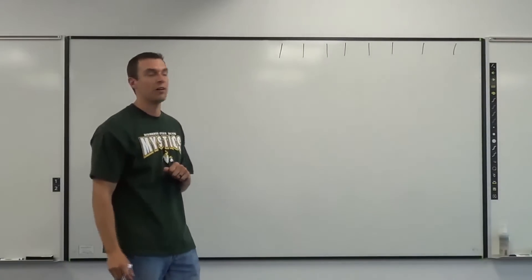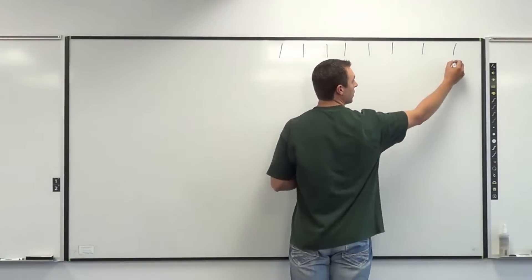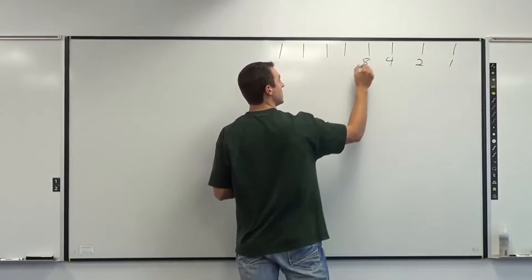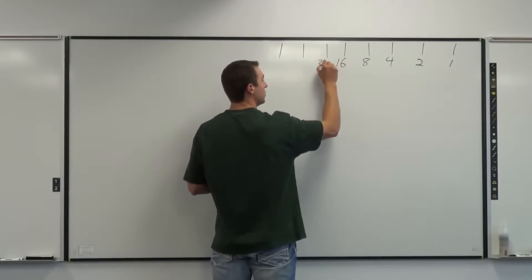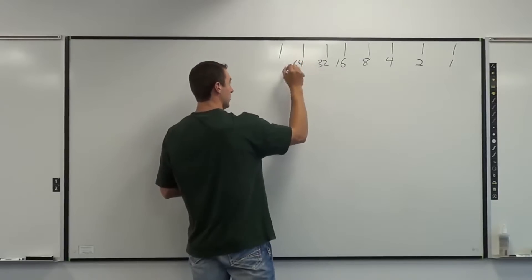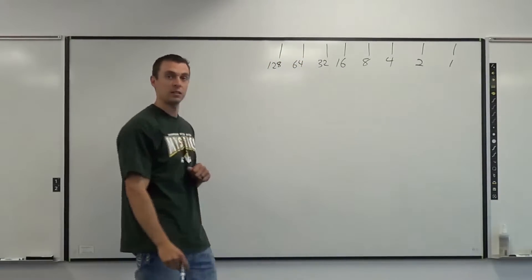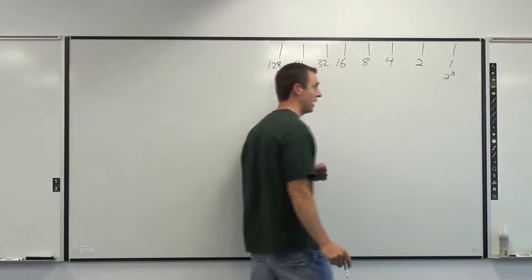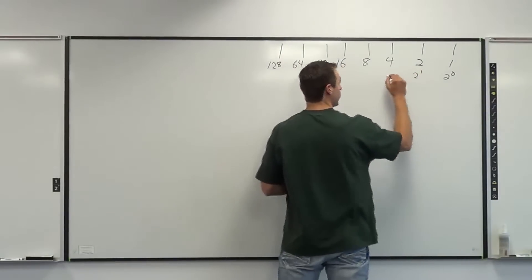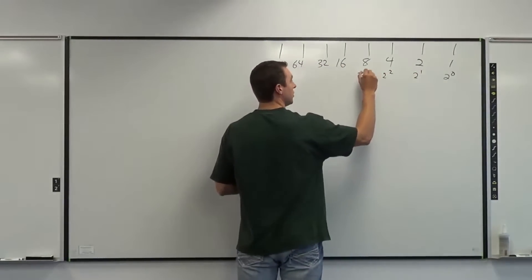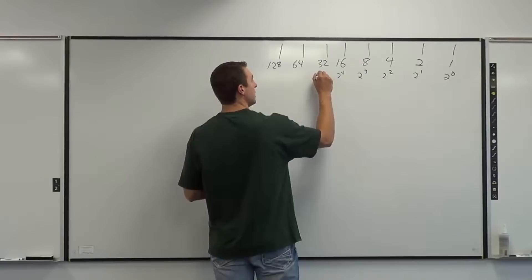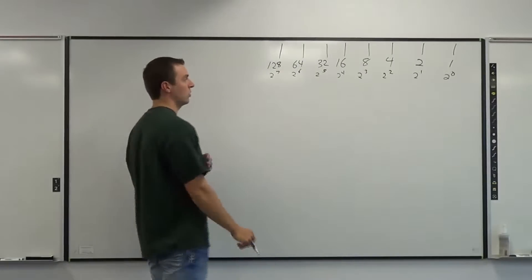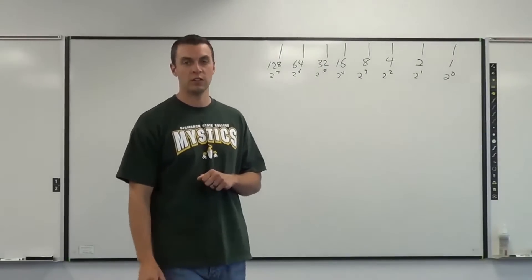Each one of these bit placeholders has a value. We start on the right-hand side with 1 and double as we go left: 1, 2, 4, 8, 16, 32, 64, 128. These are also our power numbers — 2 to the zero is 1, 2 to the first is 2, 2 to the second is 4, 2 to the third is 8, 2 to the fourth is 16, 2 to the fifth is 32, 2 to the sixth is 64, and 2 to the seventh is 128. These power numbers are going to become very important.